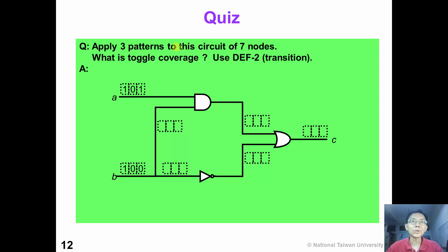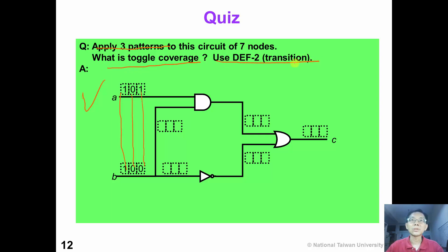Now it's time for you to work on a quiz. Given a circuit of seven nodes and we apply three test patterns: (1,1,0), (0,1,0), and (1,0,0). Please calculate the toggle coverage using the second definition, which is based on transitions. Please pause the video and work on this quiz.